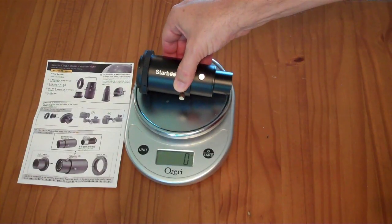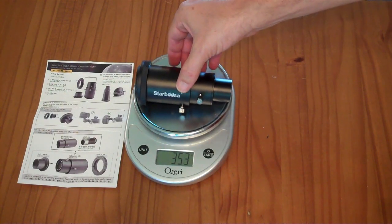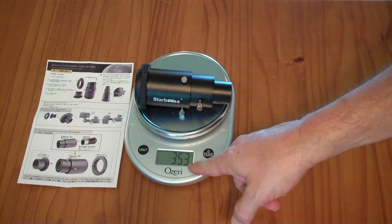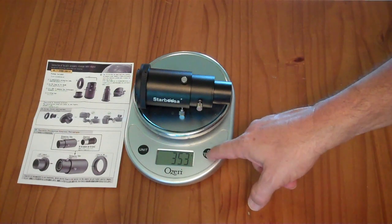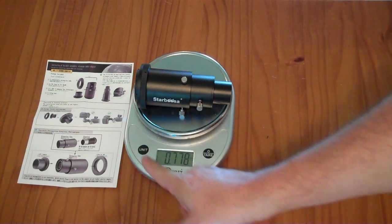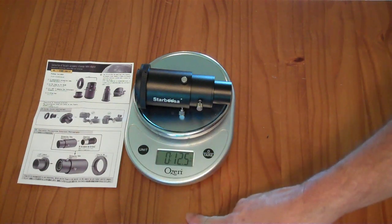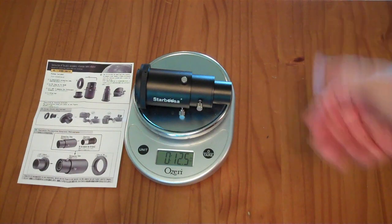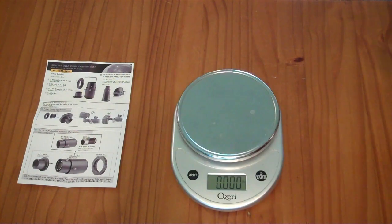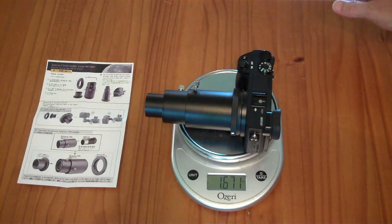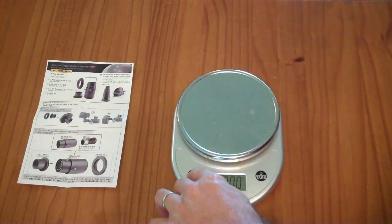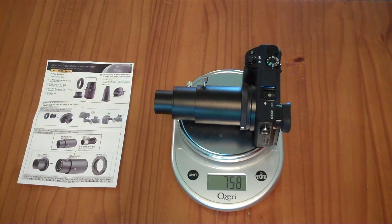This entire package with a large eyepiece inside of it is clocking in at 353 grams, and that's 0.7 pounds or 12.5 ounces. It's adding a significant amount of weight to your camera that's attached to your telescope. So with my camera body, this guy is clocking in at 1.6 pounds, 758 grams.